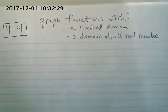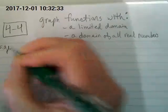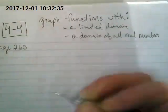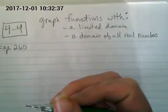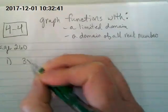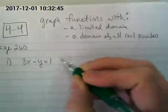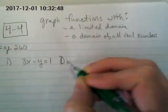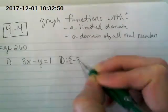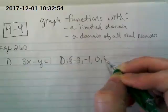If you look on page 260 at problem number one, it shows us to graph the function 3x minus y equals one, and it gives us a domain of negative three, negative one, zero, and four.